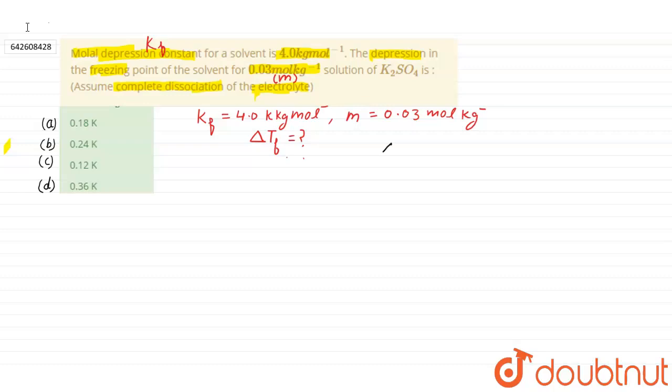What is the formula of delta Tf? Depression in freezing point, which is directly proportional to molality of the solution. Delta Tf equals Kf, which is molar depression constant, into molality, and we need to multiply by van't Hoff factor.